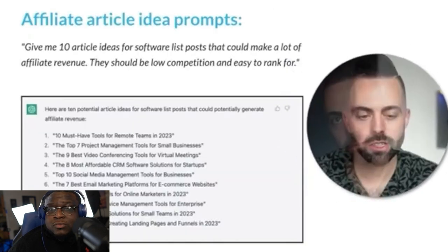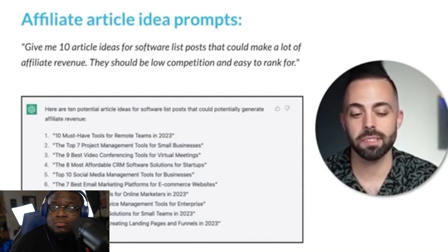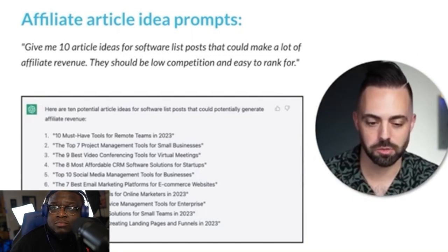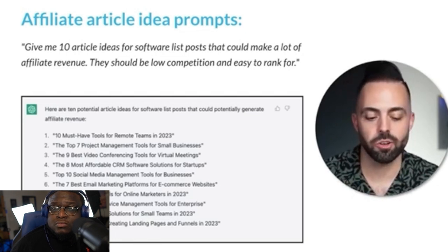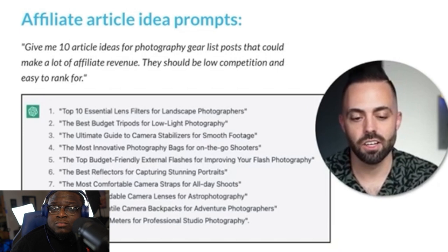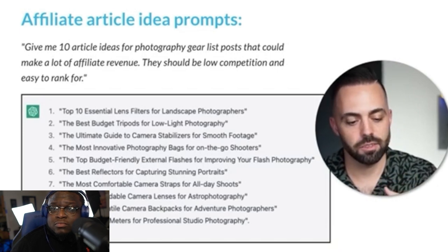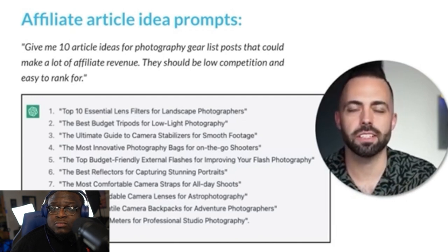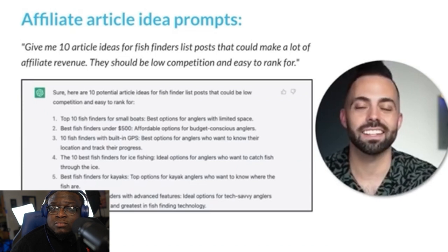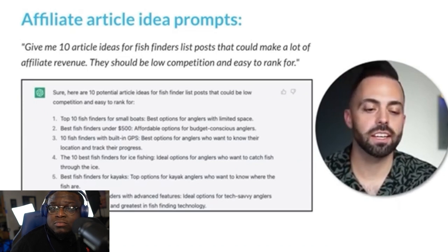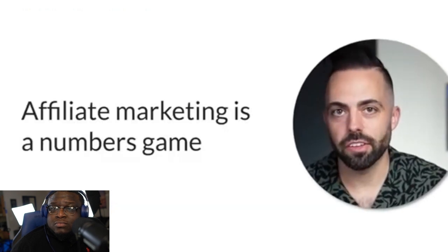You really want to use ChatGPT and AI to come up with idea prompts across many niches. You can say 'give me 10 article ideas for software list posts' and get things like tools for remote teams, project management tools, video conferencing. For photography gear: bags, reflectors, camera straps. Even something like fish finders — anything you can think of. You can get great affiliate article ideas from ChatGPT, then validate them with Ahrefs.